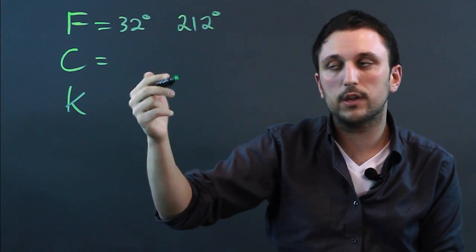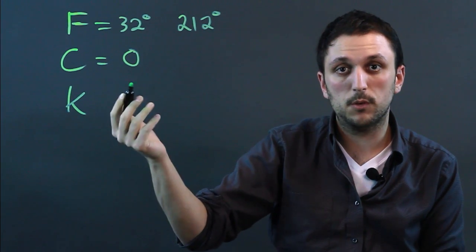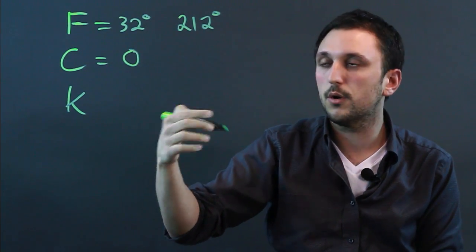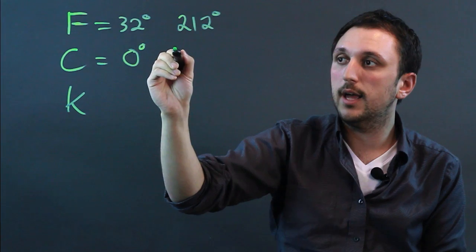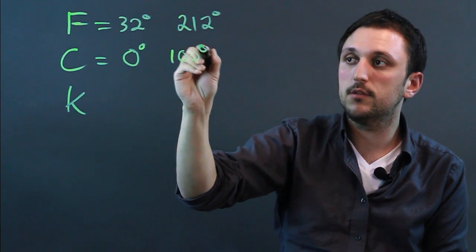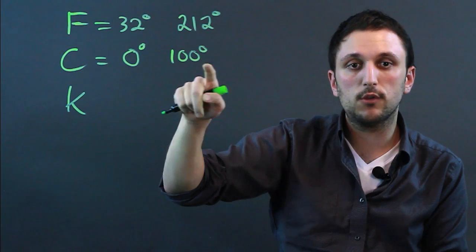Celsius is very Earth-centric because water is the most abundant substance on Earth. And zero is freezing, and 100 is boiling. So that's nice and easy to remember.